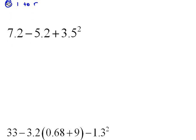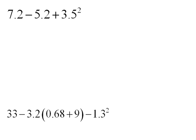Let's work a problem and see what's going to happen here. We have 7.2 minus 5.2 plus 3.5 squared. So we have subtraction, addition, and squaring. The squaring must come first, because exponents come before addition and subtraction.